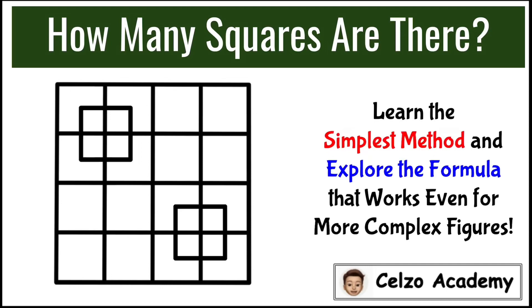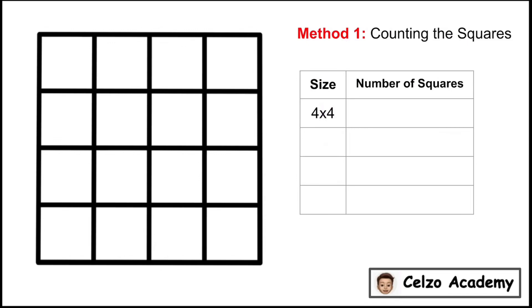So let's begin with the counting method. First, I will remove the two squares inside the big square. So now we have a 4x4 grid. To have a more systematic way of counting the number of squares, we will categorize the squares according to their sizes.